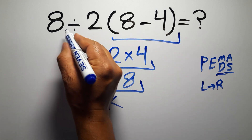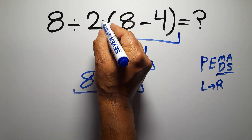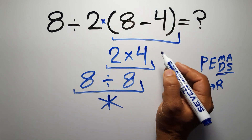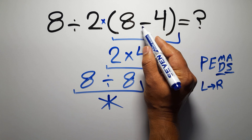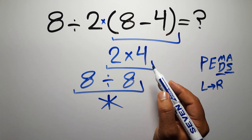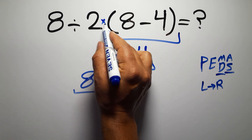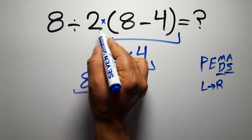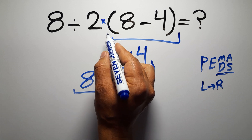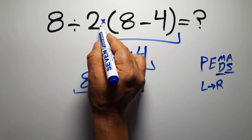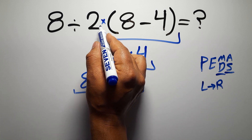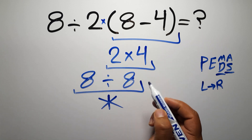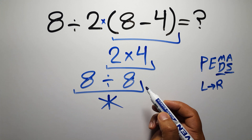In this expression, we have one division, one multiplication, and one set of parentheses. Inside these parentheses, we have one subtraction. We also have a multiplication here, because in mathematics, when a number is placed next to parentheses, it means multiplication, and we usually don't write the multiplication sign for brevity.